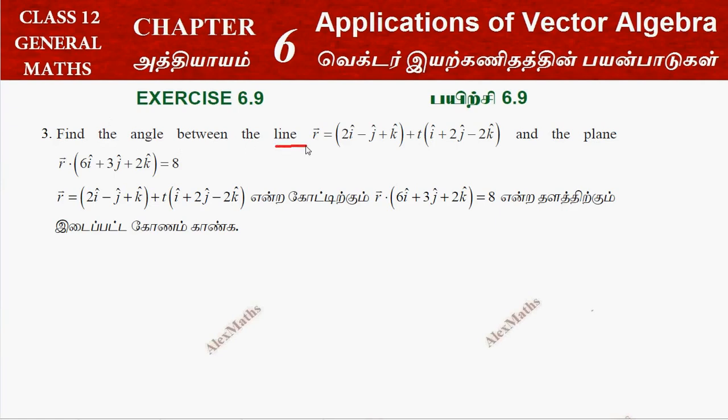Find the angle between one line and the plane. We will find the angle between the line and the plane. The angle formula is sin theta equal to b vector dot n vector whole divided by mod b vector mod n vector.